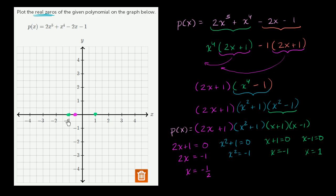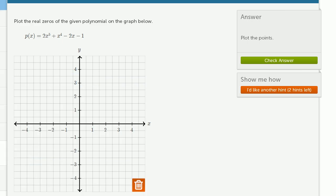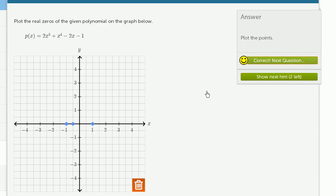And so we could plot them. It's negative 1, negative 1/2, and 1. So it's negative 1, negative 1/2, and 1. And we can check our answer and we got it right.